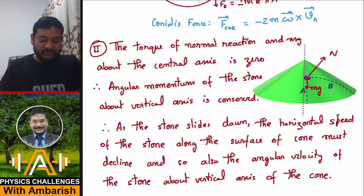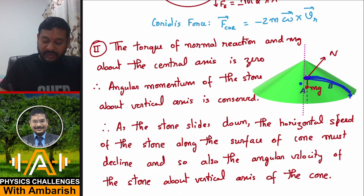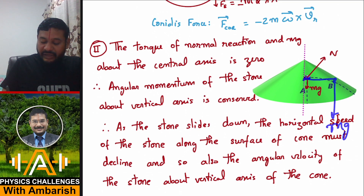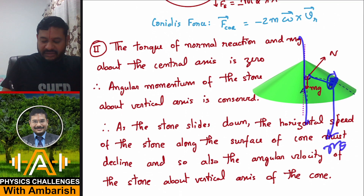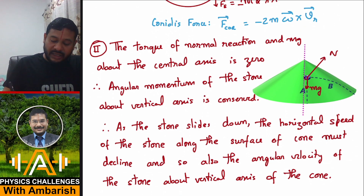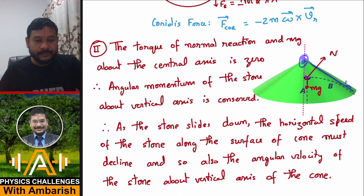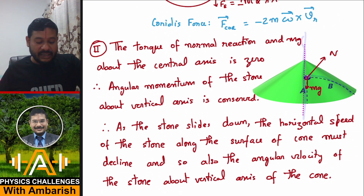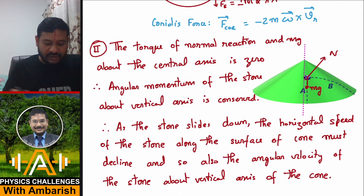The other concept I will use is that when there is zero torque, angular momentum is conserved. If a stone is moving along the surface of this cone, the normal reaction is perpendicular to the surface and therefore passes through the axis of the cone, so the torque of normal reaction about the central axis is zero. For gravity Mg, R cross Mg is horizontal, but the axis is vertical, so the component of that torque along the axis is also zero. Therefore, angular momentum of the stone about the vertical axis is conserved.